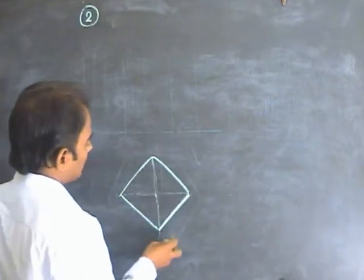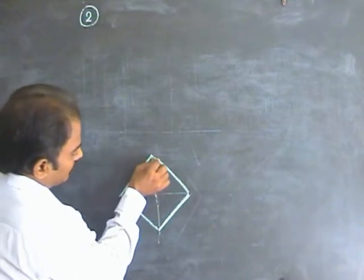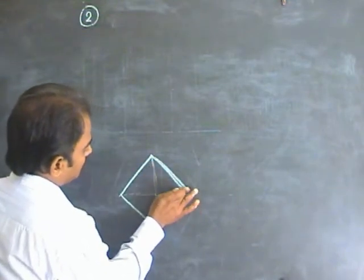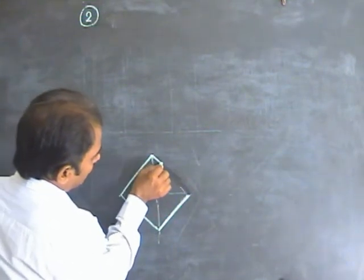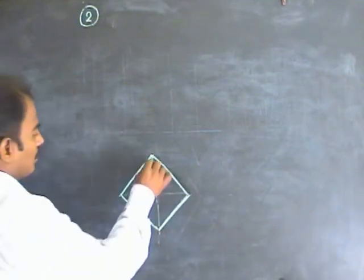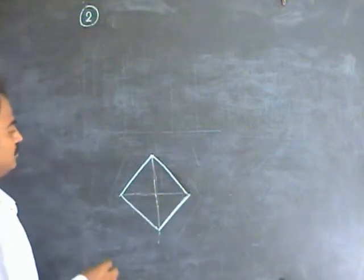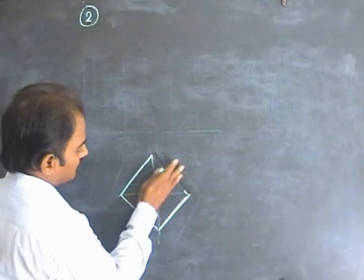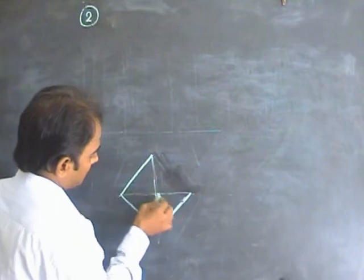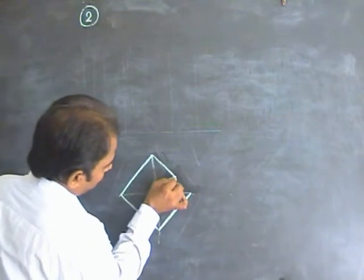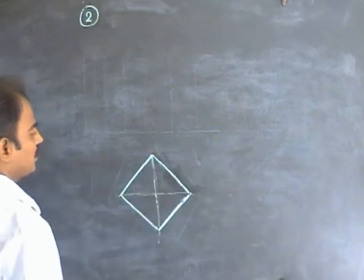Remember, the square should be of equal length — the sides should be equal. At the same time, the included angle should be strictly 90 degrees. So, the cube should be drawn in that fashion. All the sides should be equal and the included angle should be 90 degrees.